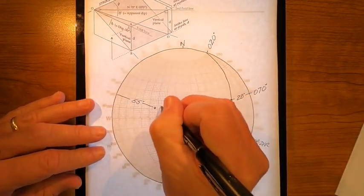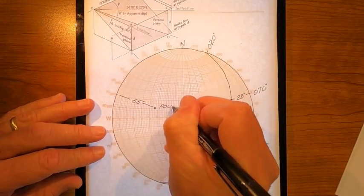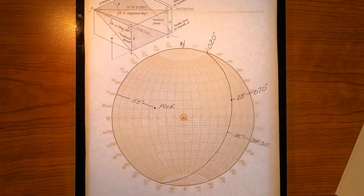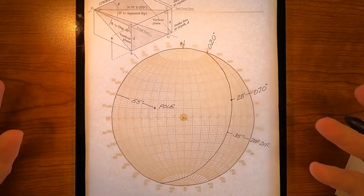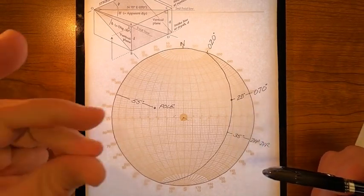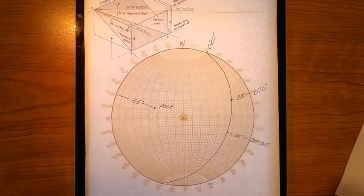So, I'm just going to label that pole. There's nothing else I can think of to do with this problem. But realize, I could have found that apparent dip in no time using a stereo net.